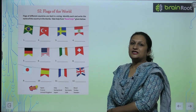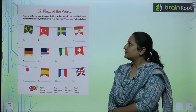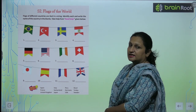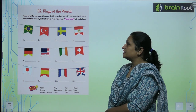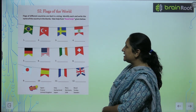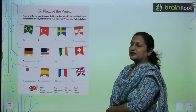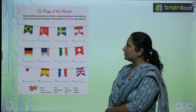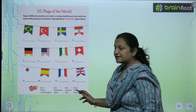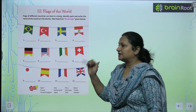Children, let's start with chapter number 52, flags of the world. Flags of different countries are tied in a string. Here they have a flag tied to different countries. Identify each and write the name of the country in the blank. Take help from the word bank given below. We have names of countries and we have to fill them in here.